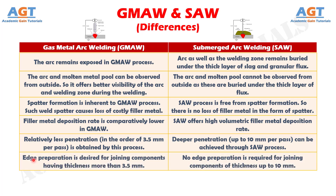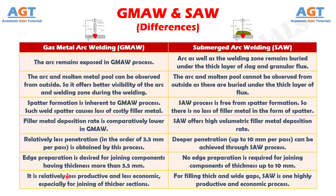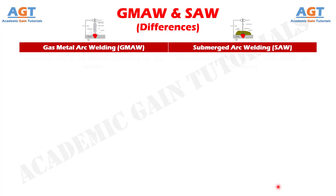Number 11: In gas metal arc welding, edge preparation is desired for joining components having thickness more than 3.5 mm, whereas in submerged arc welding, no edge preparation is required for joining components of thickness up to 10 mm. Number 12: Gas metal arc welding is relatively less productive and less economic, especially for joining of thicker sections, whereas for filling thick and wide gaps, submerged arc welding is one highly productive and economic process.